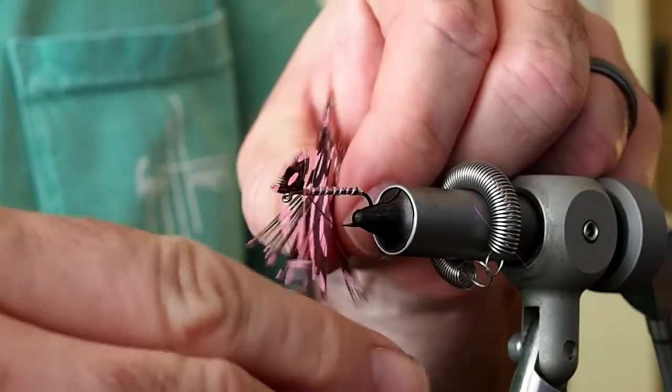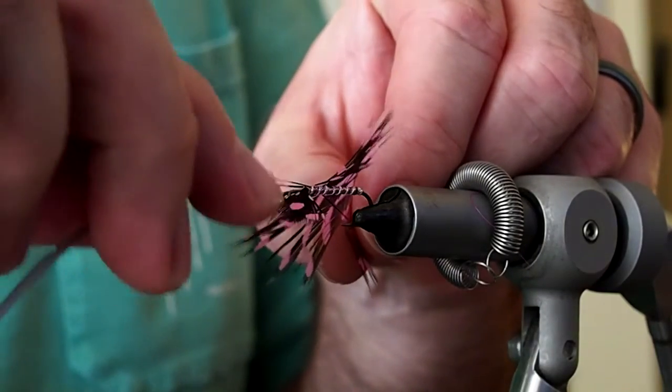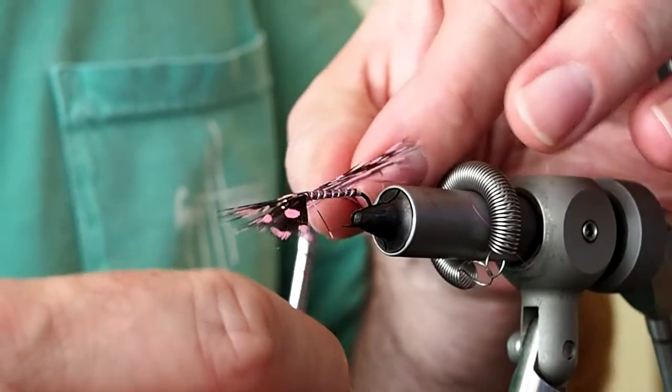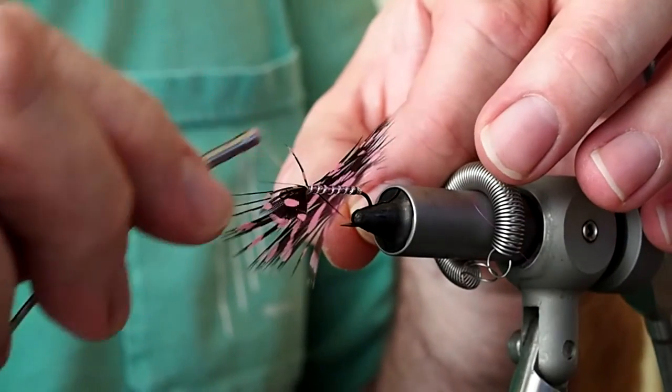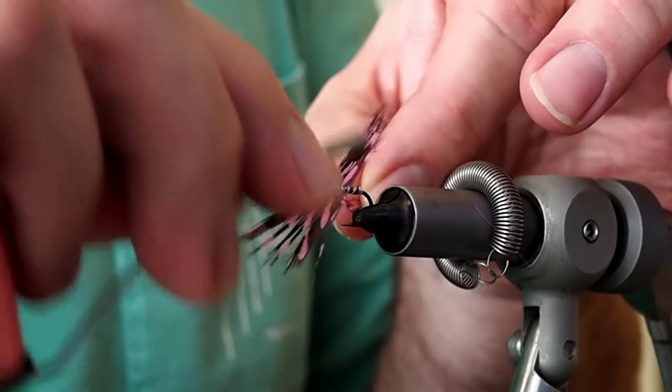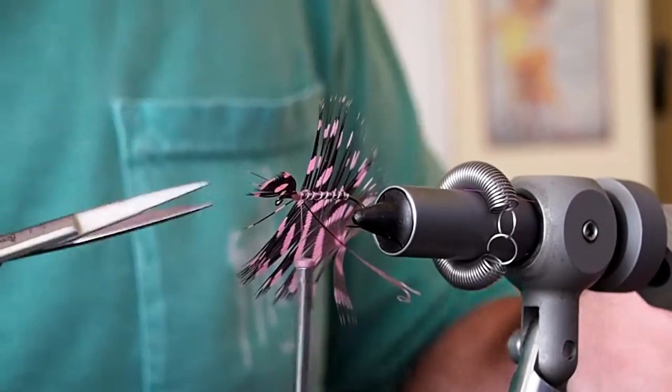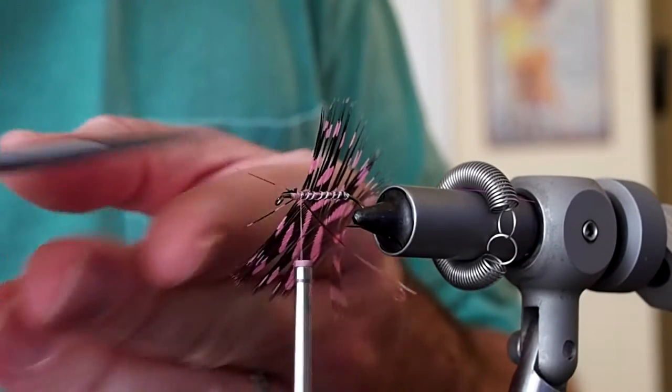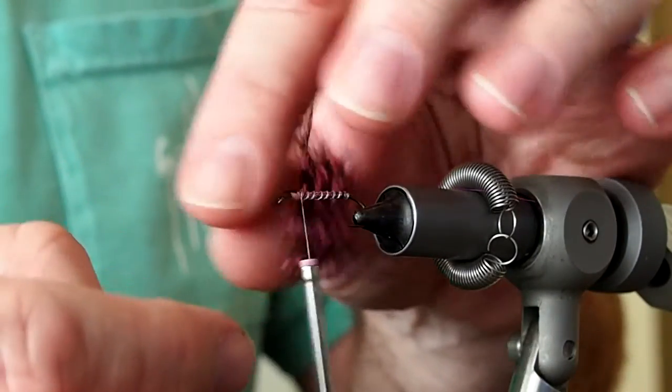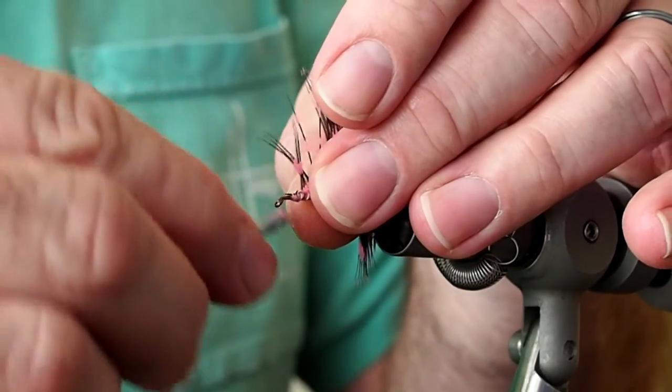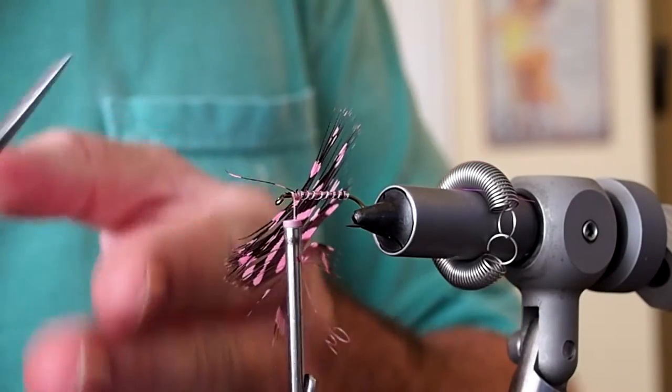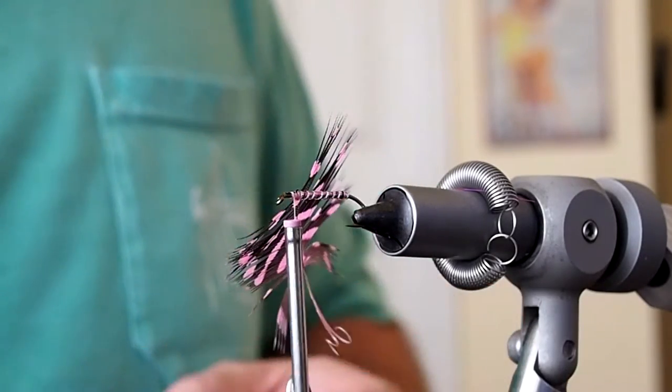A couple good tight wraps. And then we'll trim away the excess. I'm going to go ahead and bring my thread forward. Alright, so what we want to do is just kind of wet your fingers.